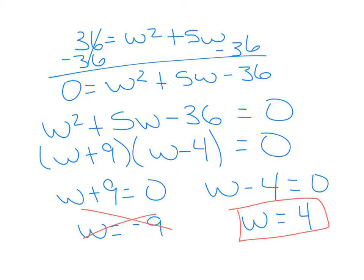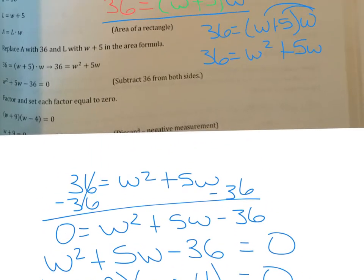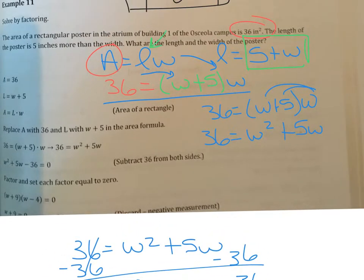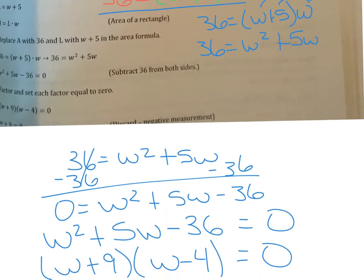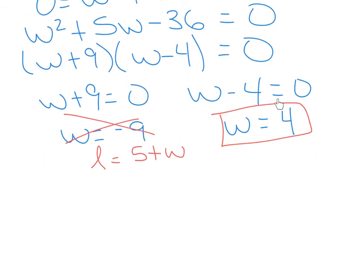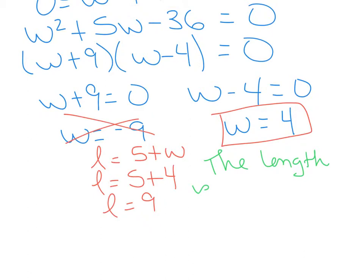We didn't find the length yet. We had the statement that length equals width plus 5, so we use that to find length. Length equals width plus 5. Substituting width equals 4: length equals 5 plus 4, so length equals 9. The length is 9 inches and the width is 4 inches. Don't forget to write your units.